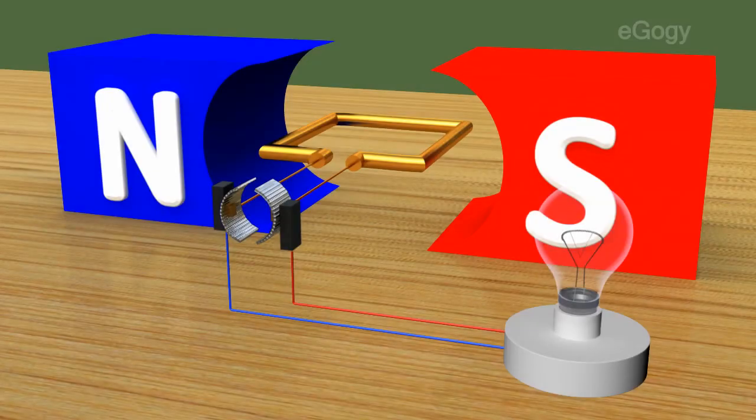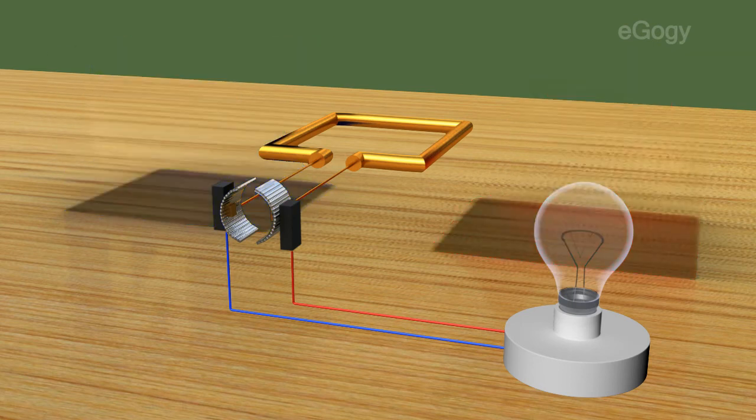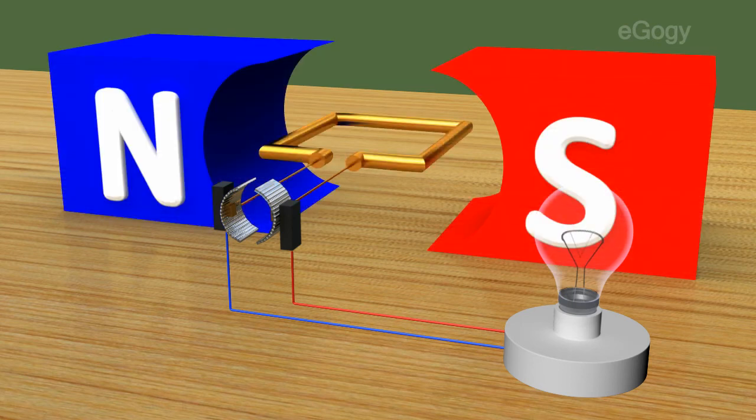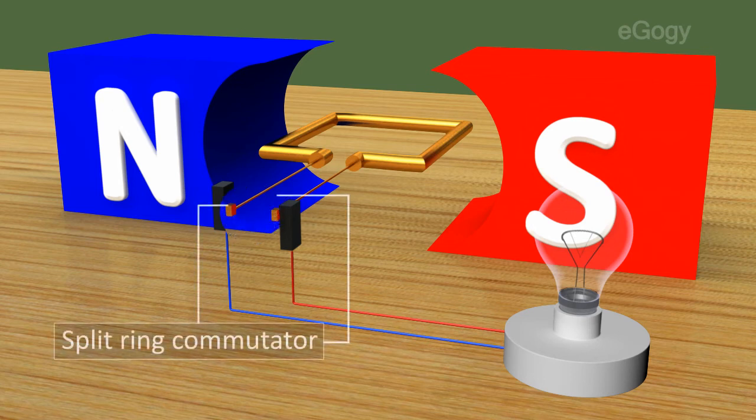DC generators. As an AC generator, the DC generator also has a field magnet and an armature coil. In DC generators, the slip rings are replaced by split rings.